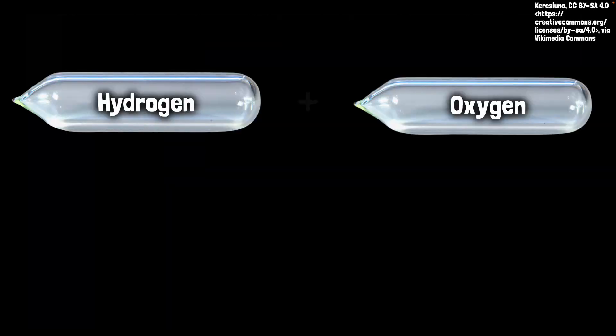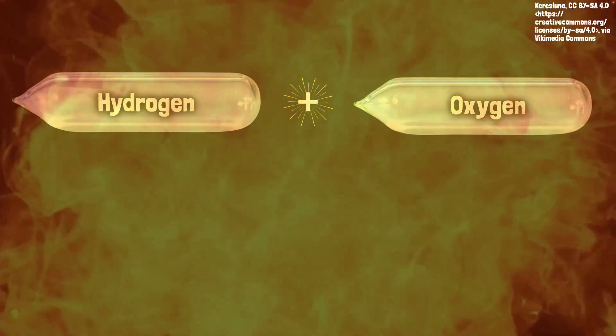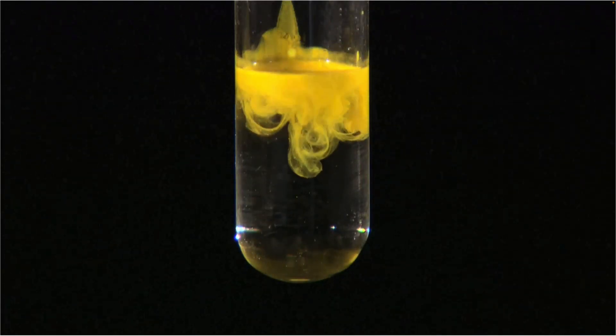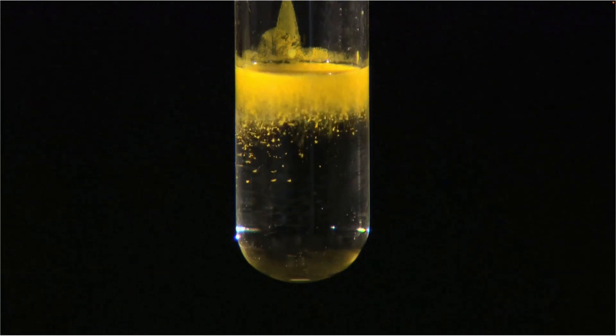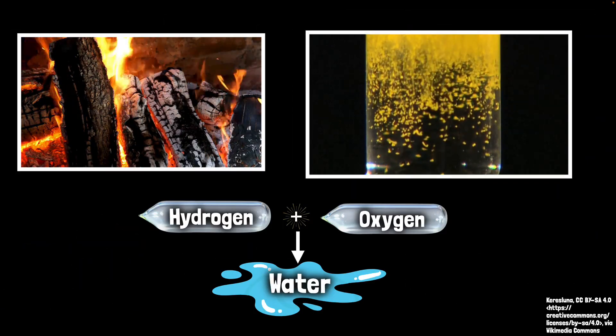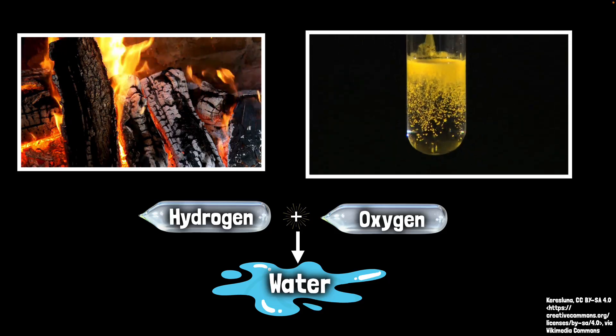When wood burns to ash, or when hydrogen and oxygen explode together to give you water, or when you mix these two liquids together to give you this beautiful yellow color solid precipitate—in all these cases we're producing new substances altogether, and we call them chemical changes or chemical reactions.